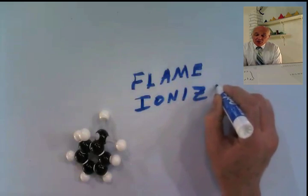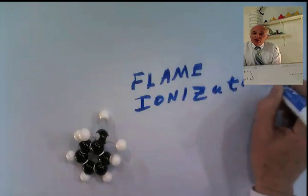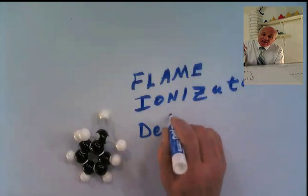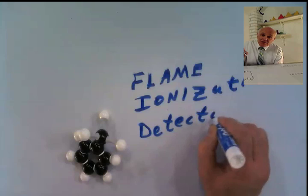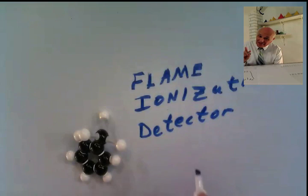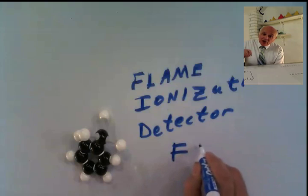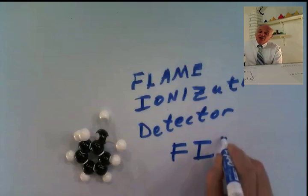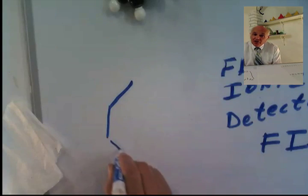We run our column through this chamber. Anything that comes along which burns — which is a lot of things, maybe most things — will produce ions. Those ions will produce a current, and that current can be measured.